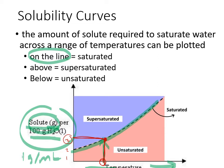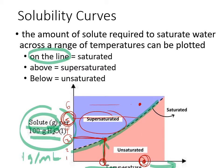If we pick a temperature and go up to the solubility curve, we can read across to the y-axis to find how many grams of solute can be held at that temperature. If a solution has an amount right on the line, it is saturated. If the amount is above the line — say six grams when the line shows five — it is supersaturated. If it is below the line — say four grams — it is unsaturated. The solubility curve draws the line of saturation.